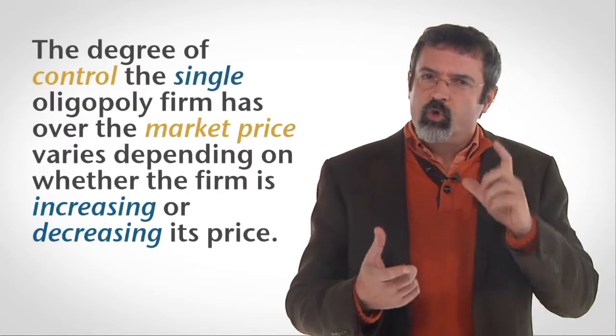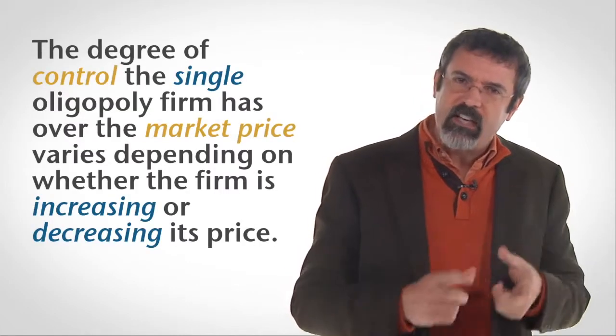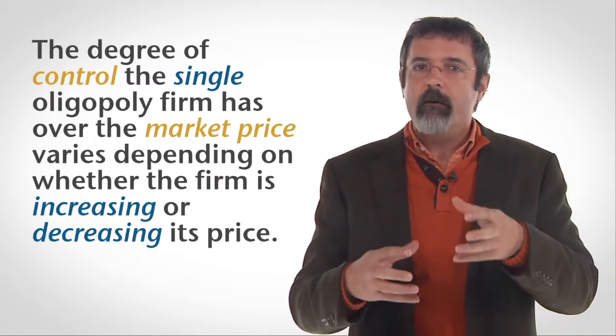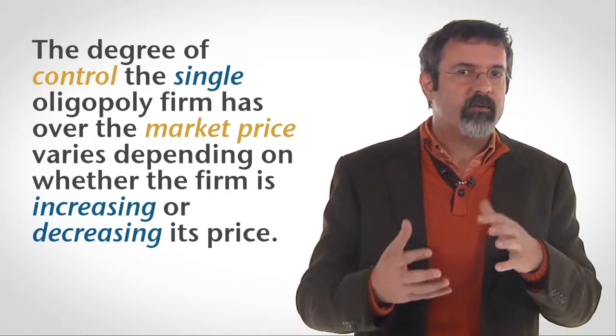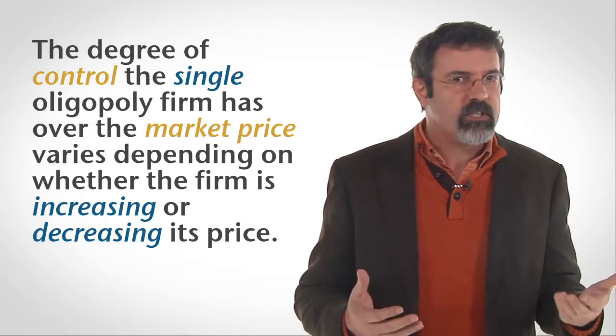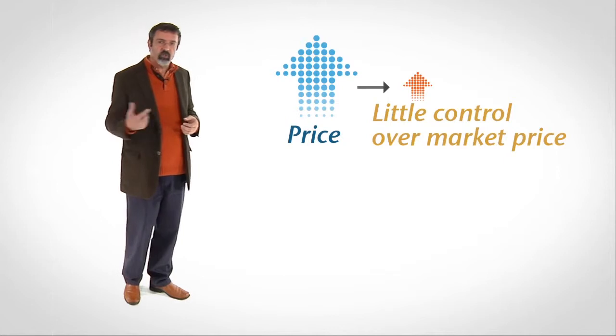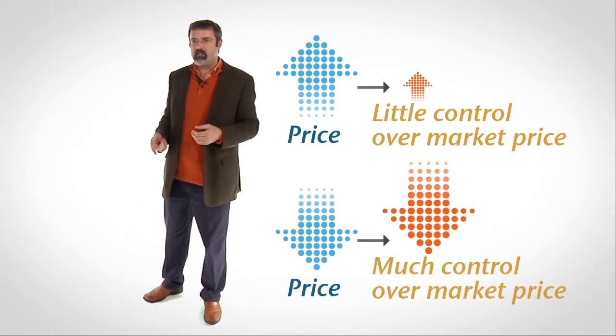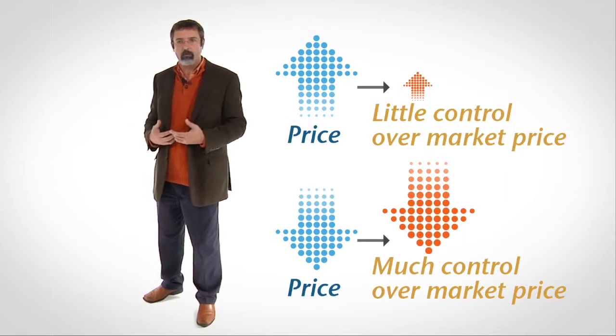In short, the degree of control the single oligopoly firm has over the market price varies depending on whether that single firm is increasing or decreasing its price. When the firm increases its price, it exhibits little control over the market price. But when the firm decreases its price, it exhibits much control over the market price.